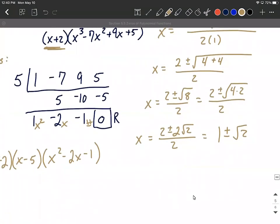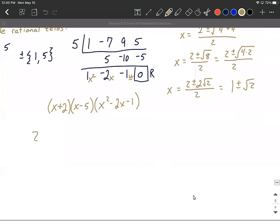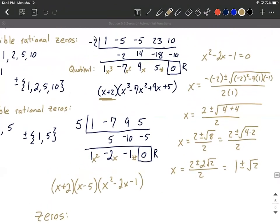Okay. So we now have two more zeros. Okay. 1 plus the square root of 2 and 1 minus the square root of 2. So let's list this out. We know our zeros and our factored form. That's the big goal on here.